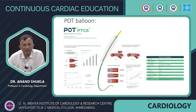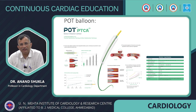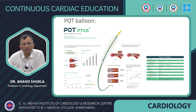The second specialized balloon category is the POT (Proximal Optimization Technique) balloon. The design difference is the shoulder — there is a small shoulder in the POT balloon less than 0.6 mm. In routine balloons, the shoulder effect can lead to edge dissection and trauma. The POT balloon minimizes shoulder length to prevent dissection. It is available in different sizes, and the POT balloon is also now available in India.